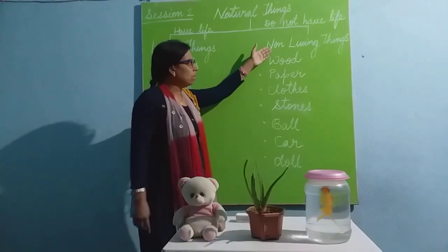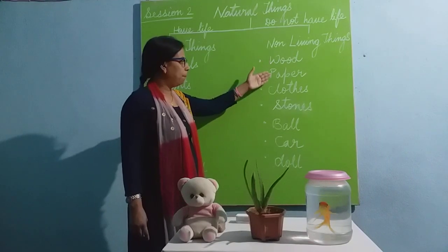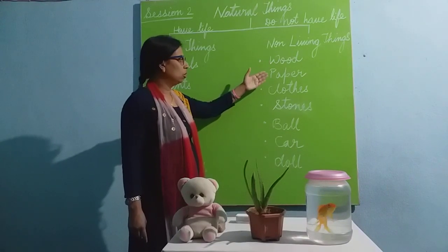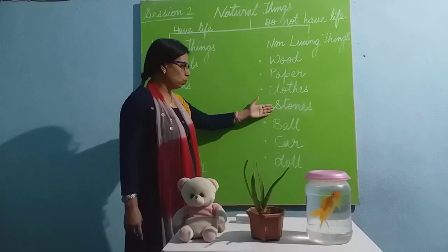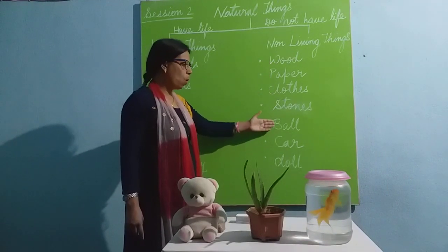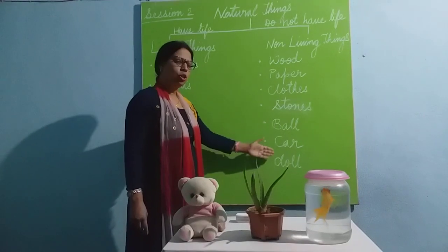Non-living things include wood, paper, clothes, stones, ball, car, and dog.